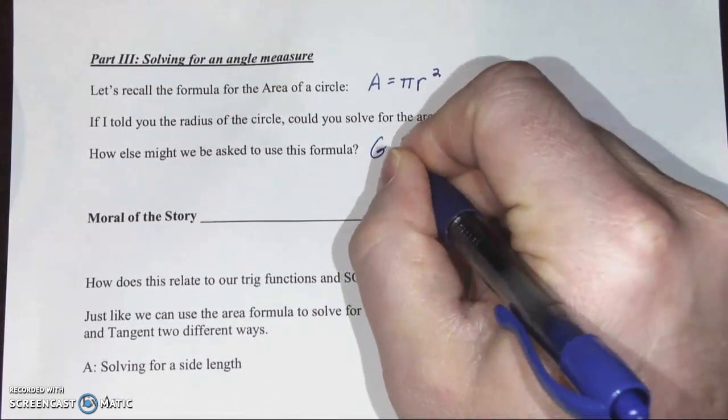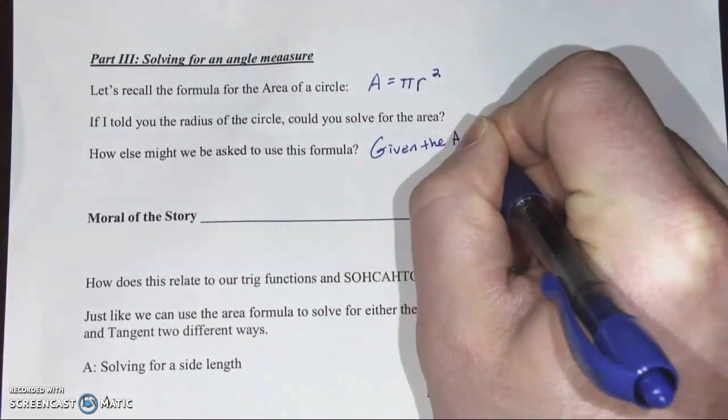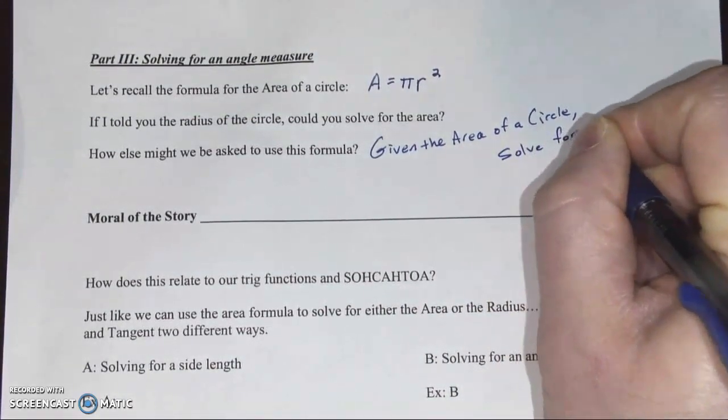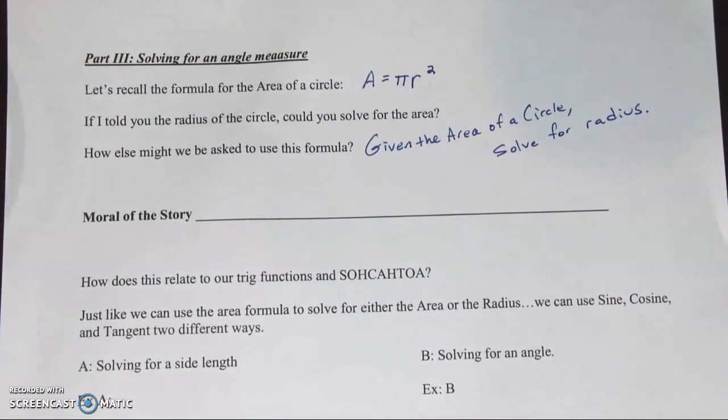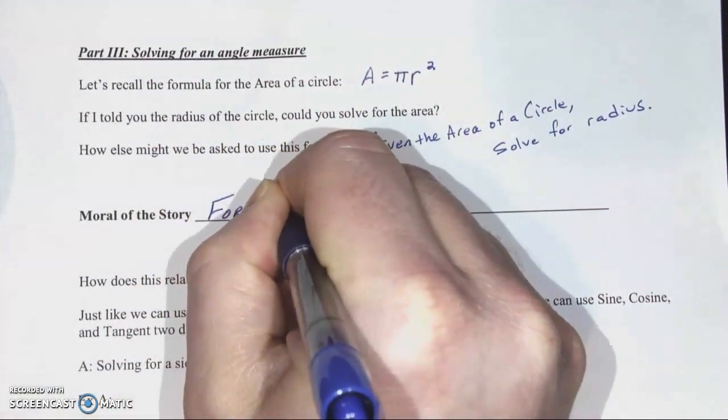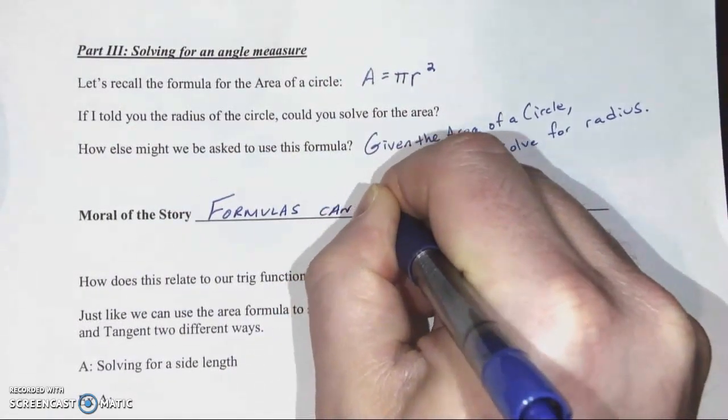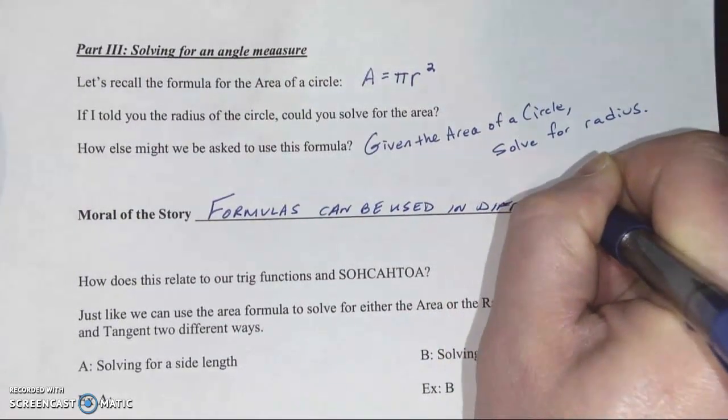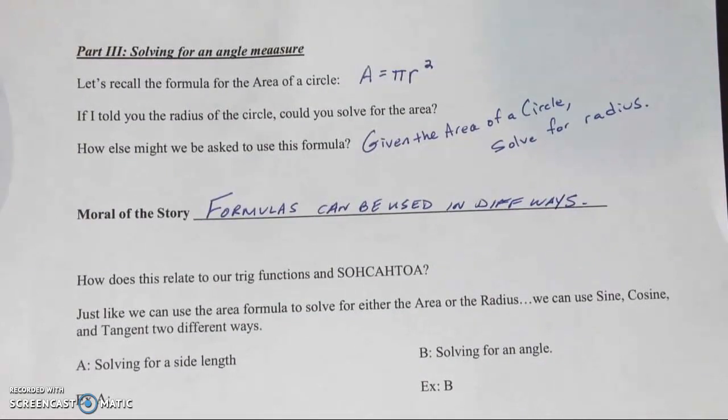As long as I give you all but one variable in any formula, you should be able to use it in multiple different ways. So how else could we do it? Maybe if we're given the area of a circle, we want to solve for the radius. You guys have done questions like that. In fact, you guys have done a lot of questions where maybe we gave you the circumference of a circle. You used that formula to find the radius and then used that radius to find the area. Moral of the story, formulas can be used in different ways.